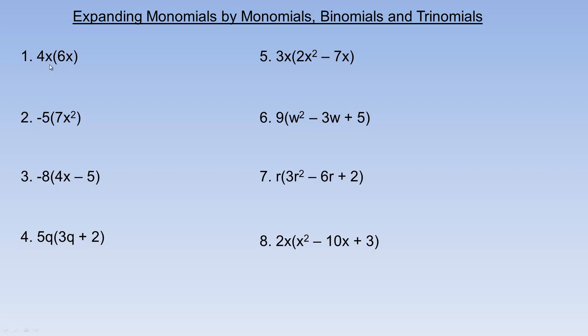Monomials means there's one term — like 4x is one term, 6x is another monomial term. When we multiply these, first we multiply the coefficients: 4 times 6 is 24. And x times x is x squared. There are two x's multiplied here, so we write it as x squared. Using the power rule: if you don't see an exponent, they're both 1's, so 1 plus 1 equals 2 — that's x squared. So we get 24x squared.